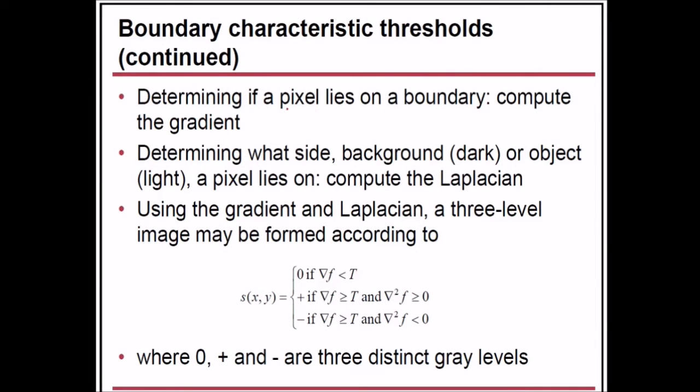Determining if a pixel lies on a boundary, we need to compute the gradient. Determining what side—background or object—a pixel lies on, we compute the Laplacian. Using the gradient and Laplacian, a three-level image may be formed: 0 if del f is less than T; plus if gradient is greater than T and del squared f (Laplacian) is greater than or equal to 0; and minus if gradient is greater than or equal to T and the Laplacian is less than 0.